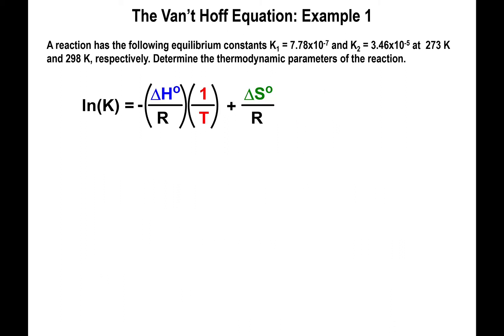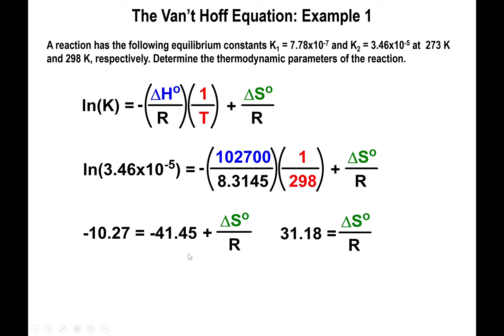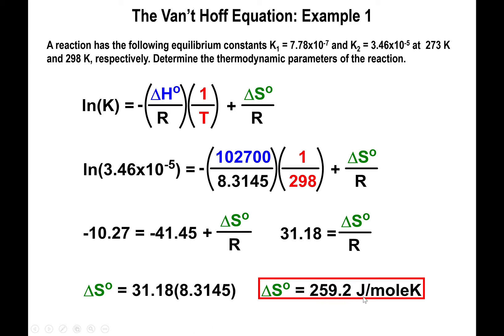Since this is based on a line, we use the equation to find ΔS. You can pick either K1 or K2 with its corresponding temperature. Using K2 = 3.46×10⁻⁵ and T = 298 K, and inputting the known ΔH value divided by R (both in joules per mole), we get: ln(K2) equals negative 10.27, and the slope term gives negative 41.45. Solving for ΔS over R by adding 41.45 to both sides and multiplying by R = 8.3145 yields ΔS = 259.2 J/mol·K.